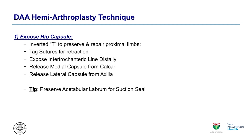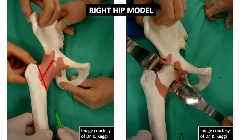The technical steps: first, expose the hip capsule. I use an inverted T capsulotomy. I repair the limbs at the end so I do retain those. I put a tag suture for retraction. I go down to the intertrochanteric line distally, just above the vastus intermedius anteriorly on the femur. I release the medial and then the lateral capsule, and I preserve the labrum for a suction seal.